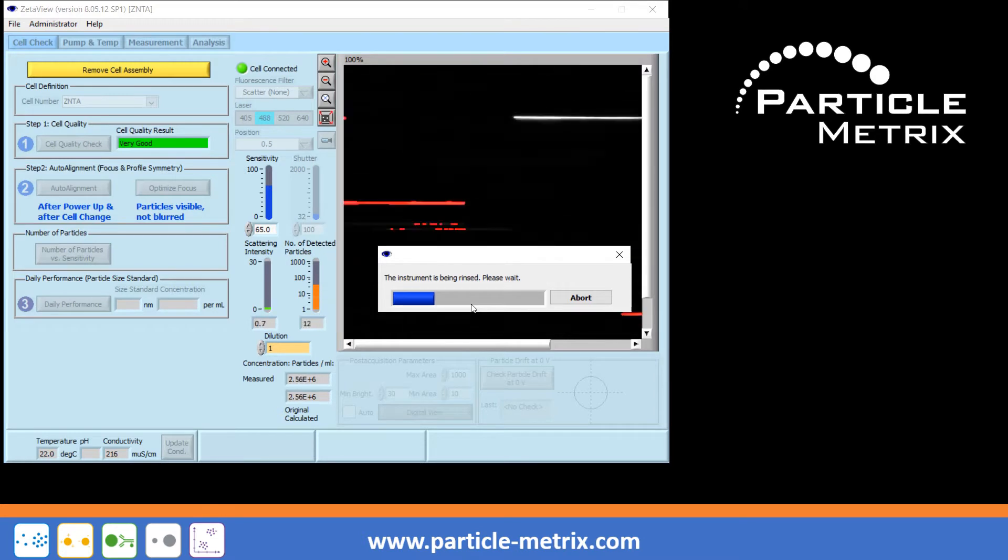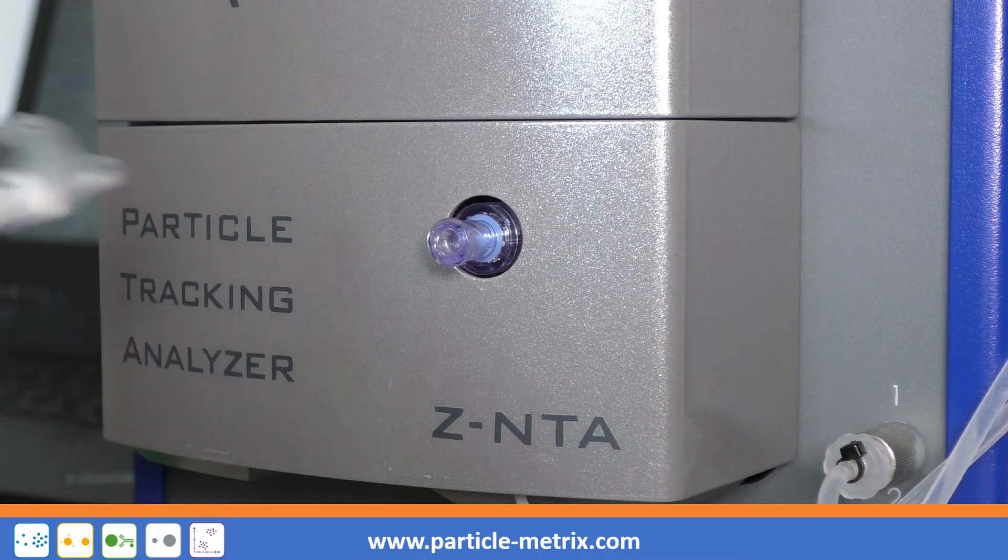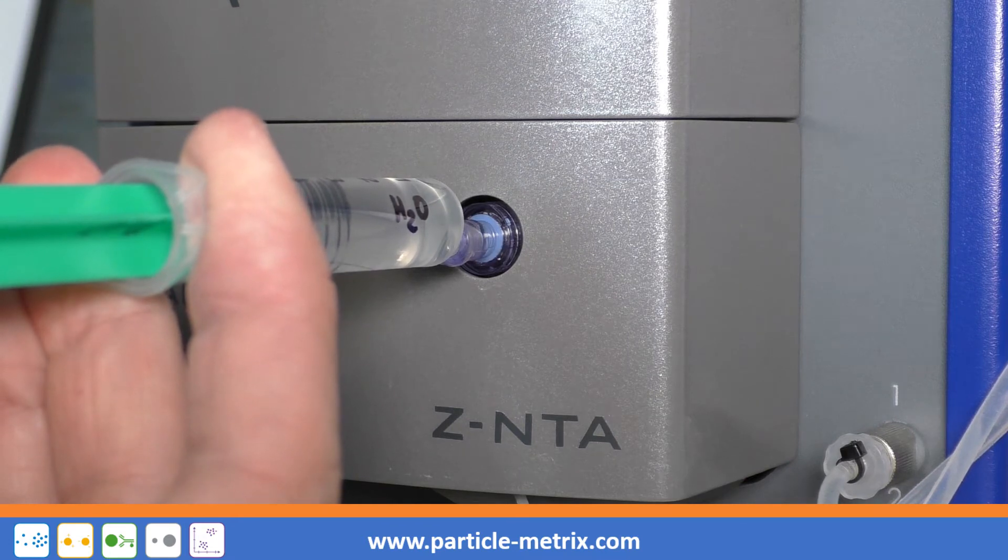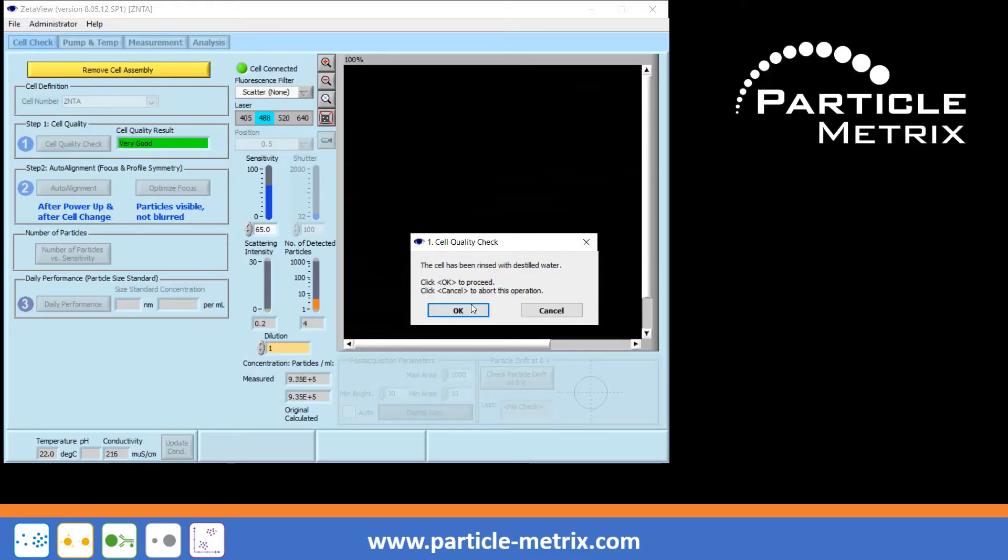While rinsing, it is recommended to inject 10-20 ml of water into the injection port. This is important because the dead volume between injection port and measuring cell should also be filled with water in order to avoid air bubbles.